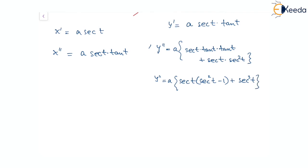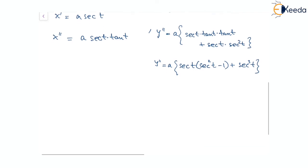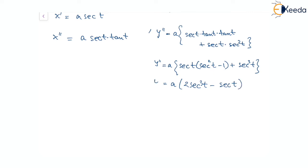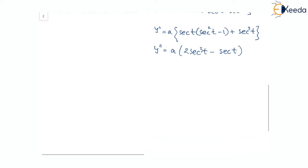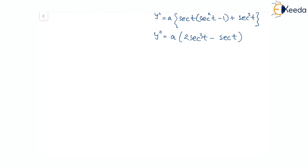Since 1 plus tan squared t equals sec squared t, we have tan squared t equal to sec squared t minus 1. Substituting, y double dash simplifies to a times 2 sec cubed t minus sec t.